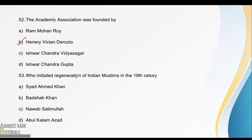The Academic Association was founded by Henry Vivian Derozio when he was a Hindu College teacher. Next: who initiated the regeneration of Indian Muslims in the 19th century? Sir Syed Ahmed Khan initiated the regeneration of Indian Muslims. He thought that Muslim society was educationally, socially, and culturally backward, so they needed to move forward — that's why he started this regeneration movement.